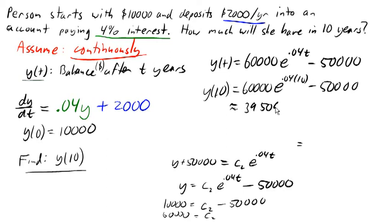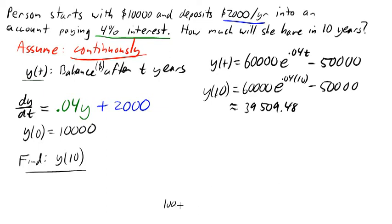This is assuming that continuous growth rate, and there's how much she has after 10 years. Notice that that's the original $10,000 plus a total of $20,000 deposited. So $30,000 have been deposited. The other $9,000 there is from interest.